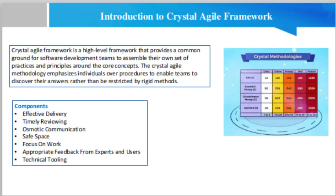Different Crystal Agile methods can be categorized as follows. Crystal Clear method: team size 1 to 6 people, project size small. Crystal Yellow method: team size 7 to 20 people, project size small to medium. Crystal Orange method: team size 21 to 40 people, project size medium. Crystal Red method: team size 41 to 80 people, project size medium to large. Crystal Maroon method: team size 81 to 200 people, project size large.